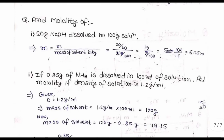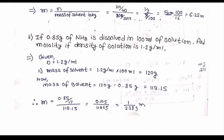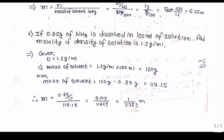Next question: 0.85 grams of NH3 dissolved in 100 mL of solution; find the molality if density = 1.2 g/mL. Mass of solution = 1.2 × 100 = 120 g. Mass of solvent = 120 - 0.85 = 119.15 g. Moles of NH3 = 0.85/17 = 1/20. Molality = (1/20) / (119.15/1000) = 1/2.383 ≈ 0.42 m.